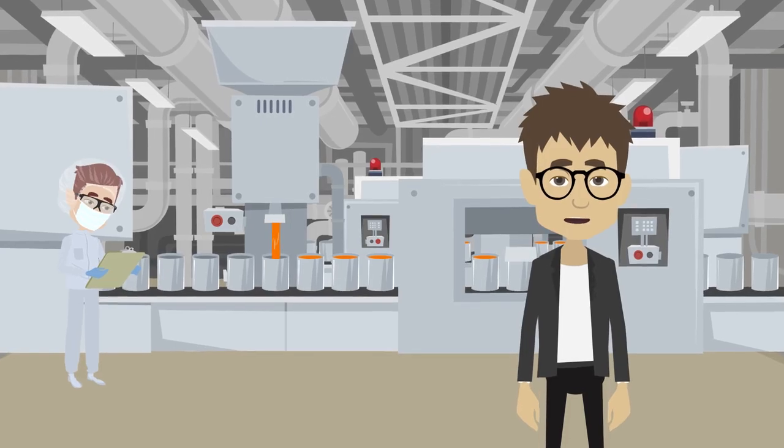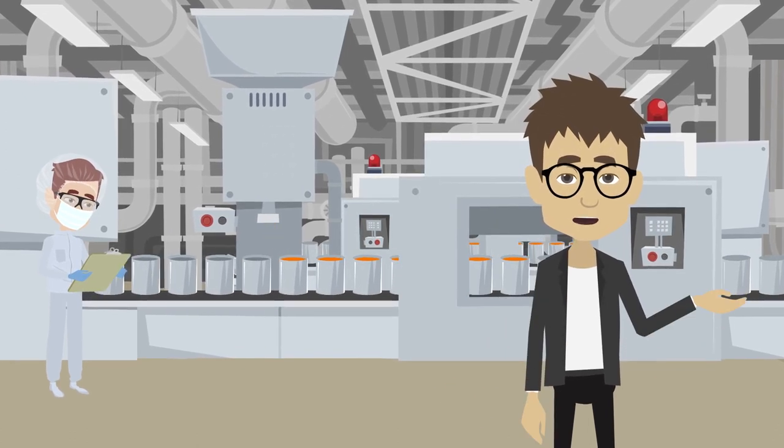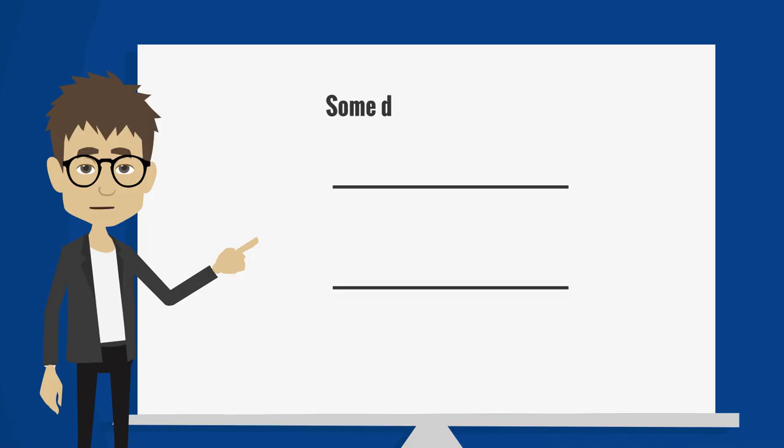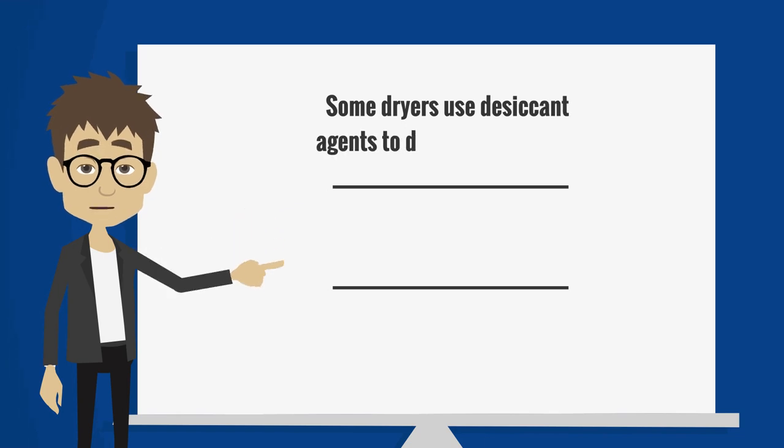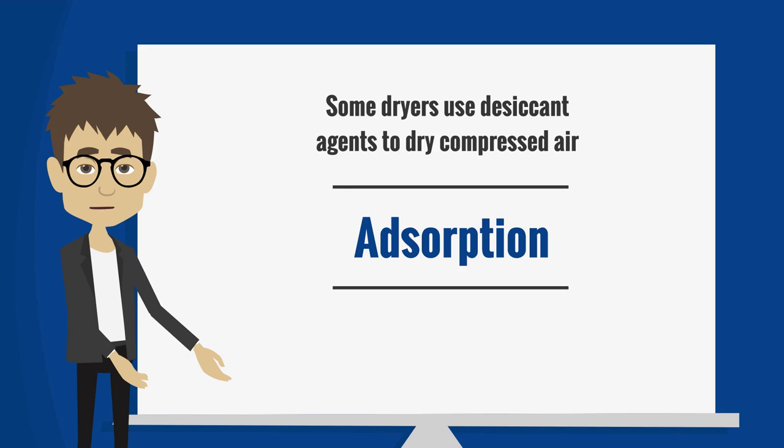These dryers are used to maintain the quality of the compressed air in manufacturing plants. Some dryers use desiccant agents to dry compressed air in a process known as adsorption. These are called desiccant dryers.